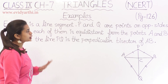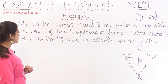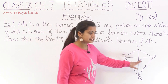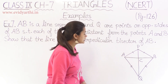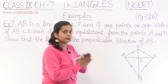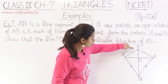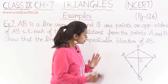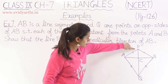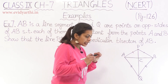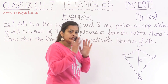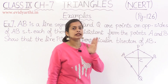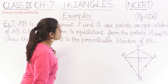AB is a line segment. P and Q are points on opposite sides of AB such that each of them is equidistant from the points A and B. So we have the line segment AB given, and P and Q are points shown in the figure. P is equidistant from A and B, and similarly Q is equidistant from A and B.